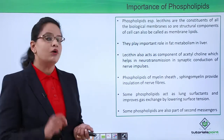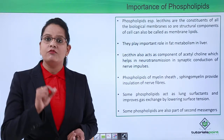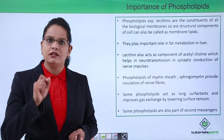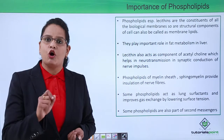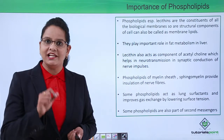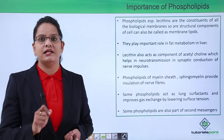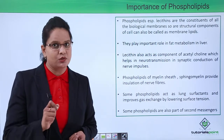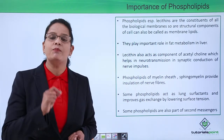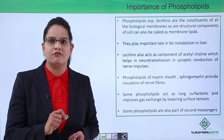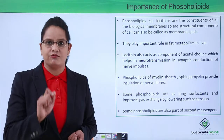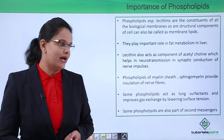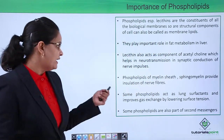One type of phospholipid, sphingomyelin, forms the component of the myelin sheath which covers nerve fibers and insulates them. So protection of nerve fibers is accomplished by means of the phospholipid sphingomyelin.